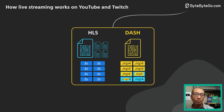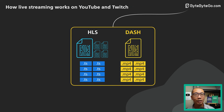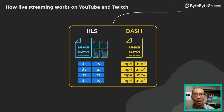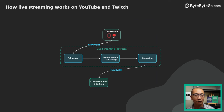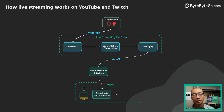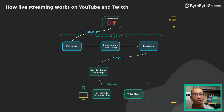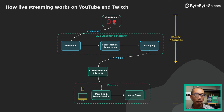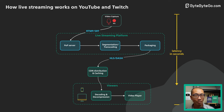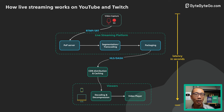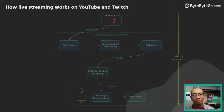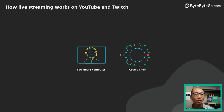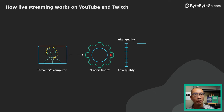DASH, or Dynamic Adaptive Streaming over HTTP, is another popular streaming format. Apple devices do not natively support DASH. Finally, the video arrives at the viewer's video player. A glass-to-glass latency of around 20 seconds is normal. There are several factors a streamer or platform can tune to improve this latency by sacrificing various aspects of video quality. Some platforms simplify this by providing a coarse knob for the streamer to choose the level of interactivity they desire, and the platform then adjusts stream quality based on that input.